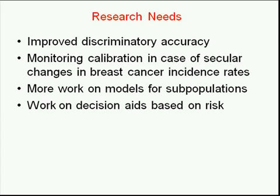Graham Colditz notes that several models were missing from the absolute risk prediction list—peer-reviewed publications by Dr. Rosner for breast, ovary, colon, and melanoma were not included. Also Esther Wei is first author on an American Journal of Epidemiology paper on colon models that was missed. Andy acknowledges that if Bernie's model was omitted from the breast absolute risk model list, he apologizes, and will certainly add those. Thank you, Graham.